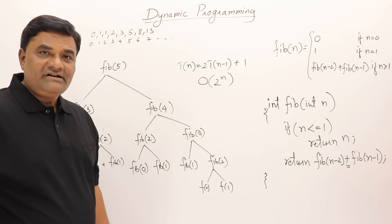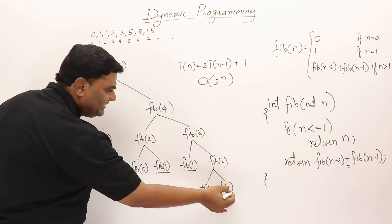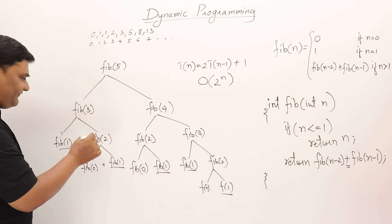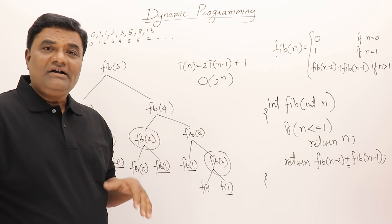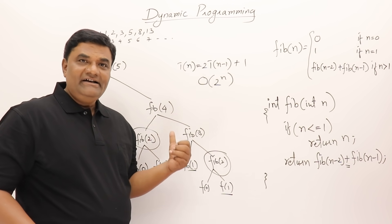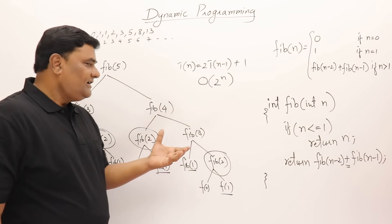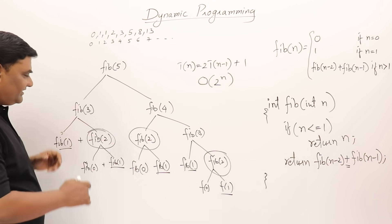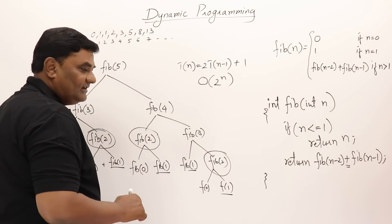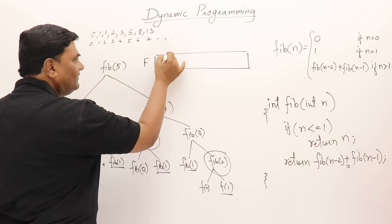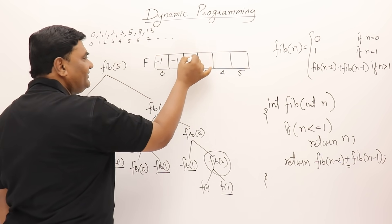Is there any way to reduce this time? Observe that fib(1) is being called many times, and fib(2) is called here, here, and here. Why call the same function again and again for the same parameter? With this idea we can reduce function calls. I'll store the result of each Fibonacci call so that once fib(2) is computed, it won't be called again. I'll use a global array initialized to -1.